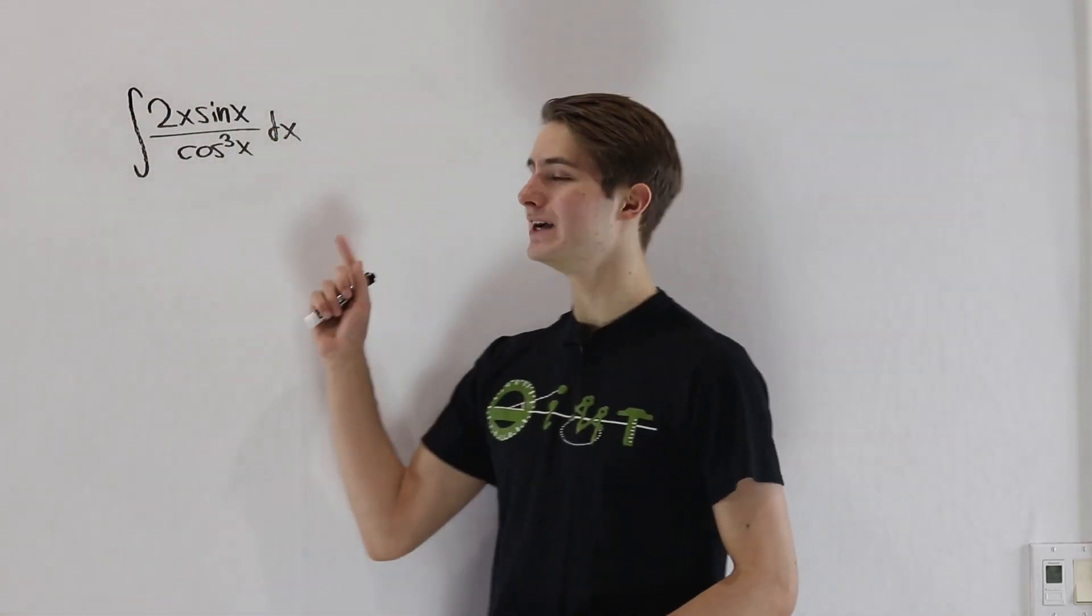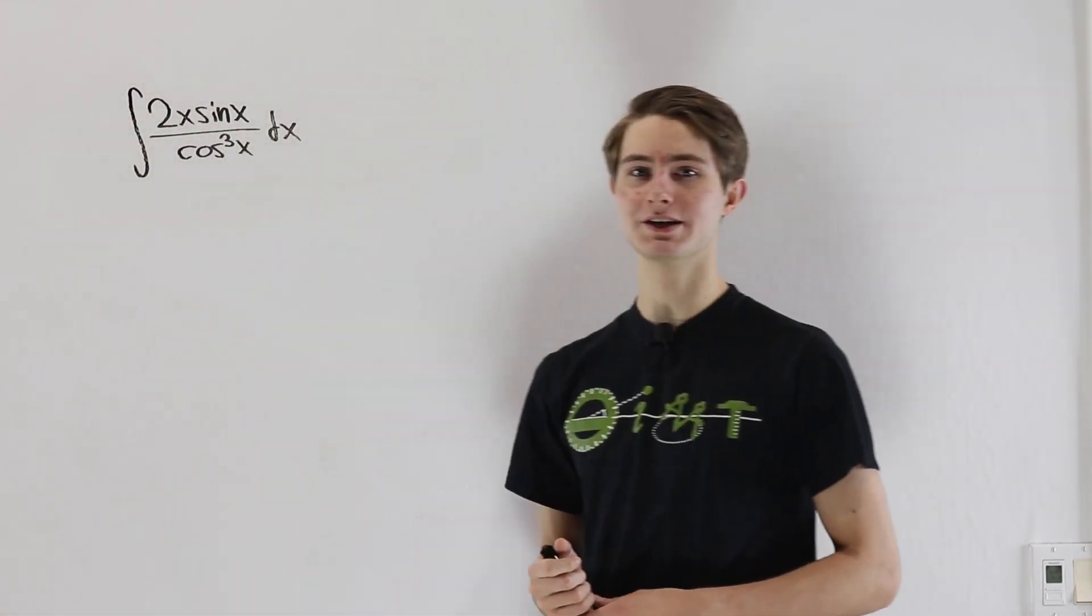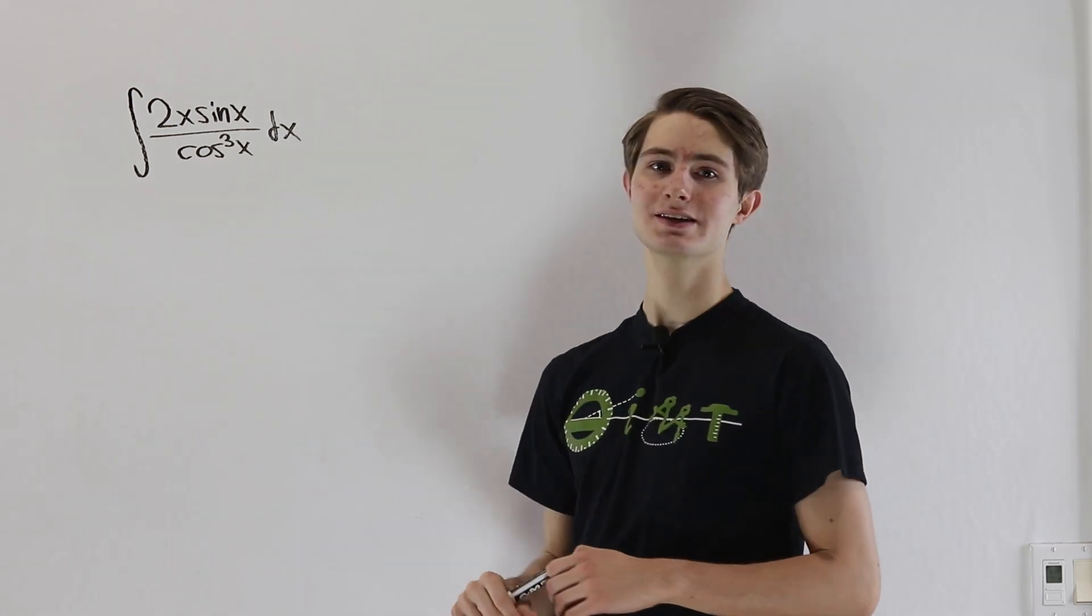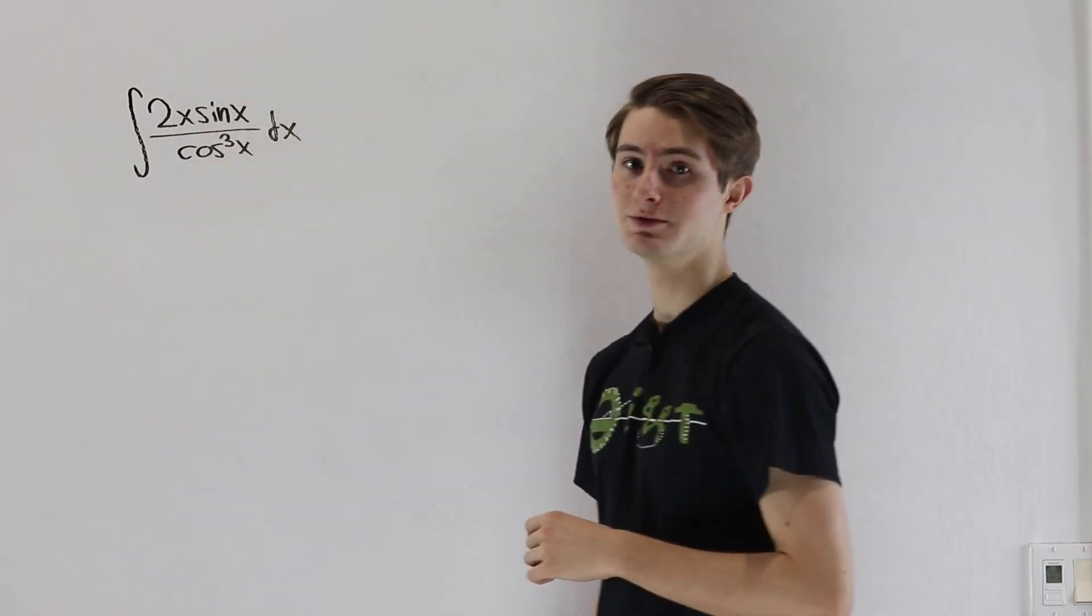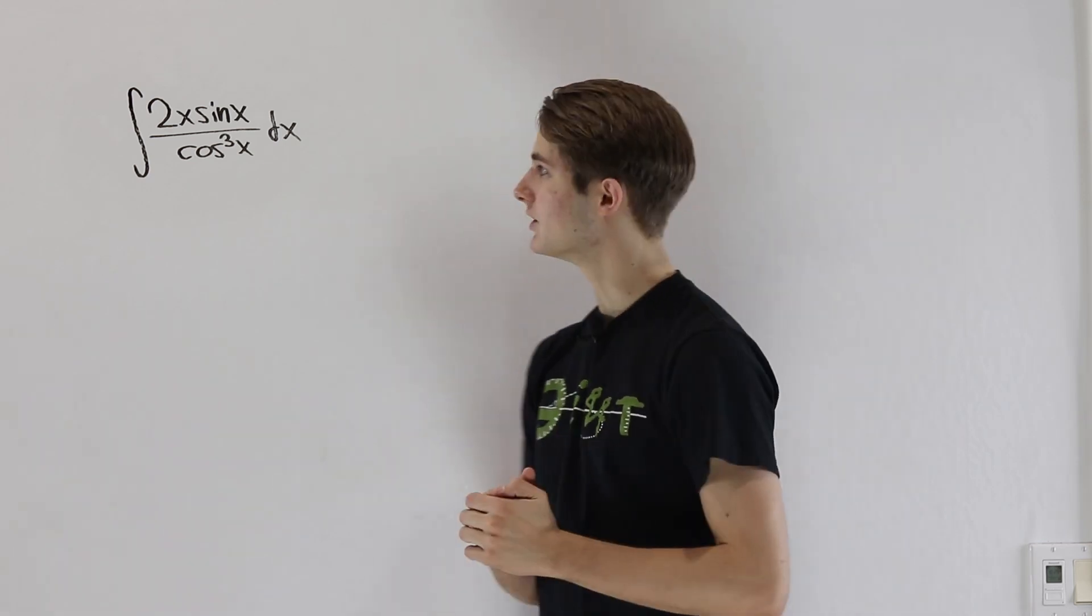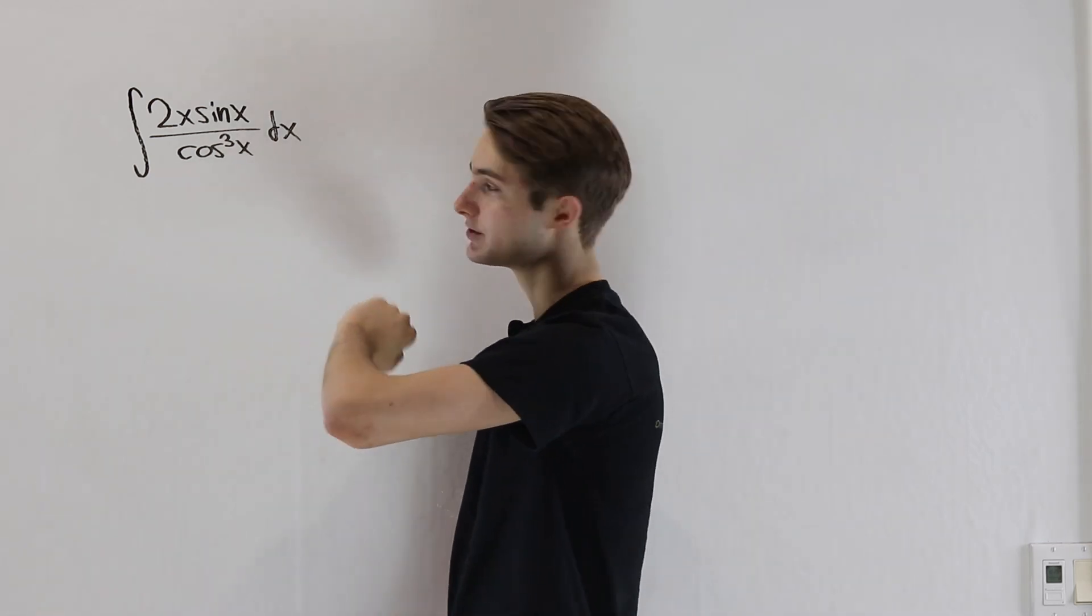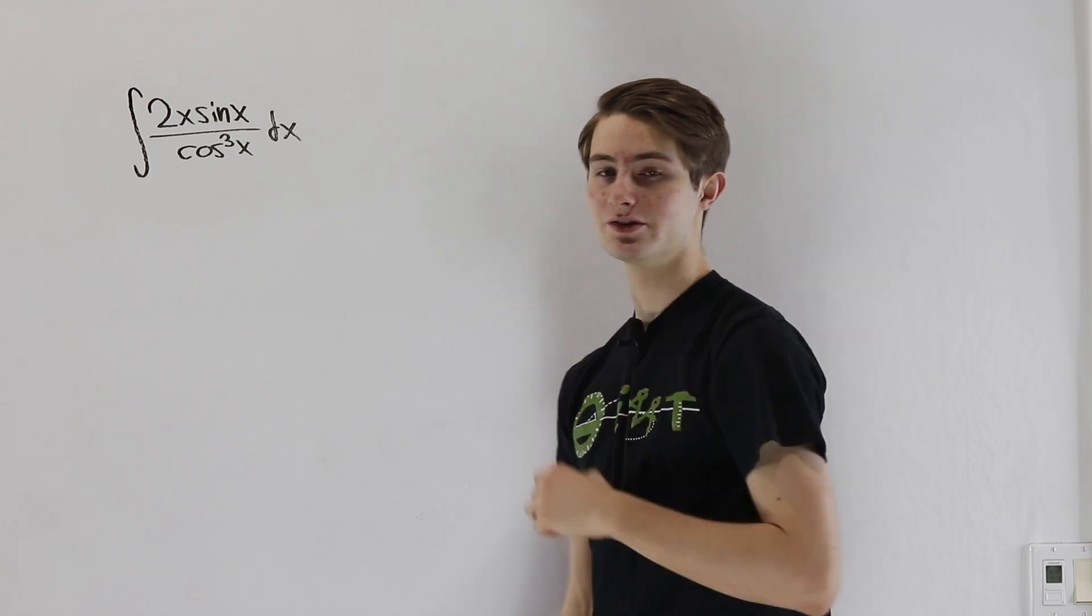So we are going to do the integral of 2x sine of x divided by cosine cubed of x dx. Now if we just had the integral of sine x over cosine cubed of x, that would be pretty easy because we can just substitute that bottom of cosine x and use sine x as our du.